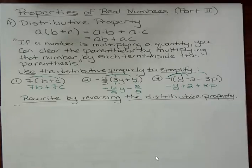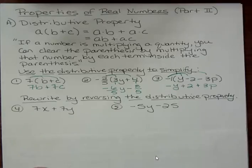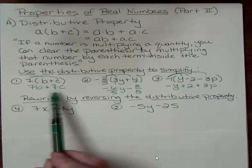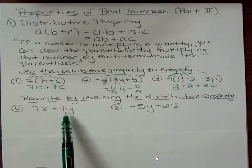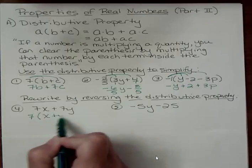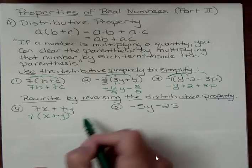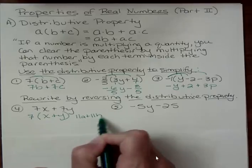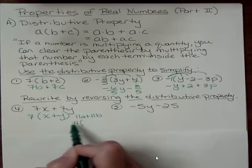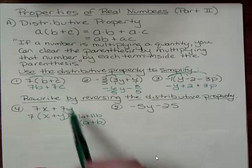So what about if we wanted to reverse the distributive property and rewrite that? What we'd have to do is figure out what's that common factor that both of these have in common that we can take out. If I went to distribute that back through, I would get 7x plus 7y. Those two expressions are equivalent. So you can go back and forth. This is multiplying, and this is actually factoring. We call factoring.